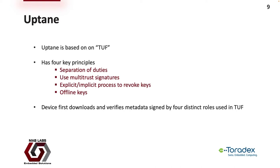Uptain is itself based on what's known as The Update Framework, or TUF for short. TUF secures updates by associating different pieces of metadata with each update, and the metadata itself must be secure. TUF has four key principles: it separates certain duties associated with the backend during the update process, each element generating certain metadata; it uses multi-trust signatures where metadata must be signed by a minimum number of backend elements; it supports explicit or implicit key revocation via expiry dates or by signing new metadata; and it uses offline keys that are air-gapped from the internet so the most sensitive metadata cannot be signed even if the repository is compromised.